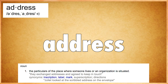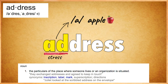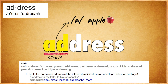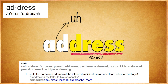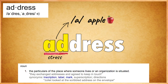In regard to pronunciation: when we use the noun, we want to put the stress on the first syllable and use the 'a' sound as in 'apple' — 'address,' 'address,' 'address.' For the sake of pronunciation, don't worry about that first D; just focus on putting the stress on the 'a' sound: 'address.' Then with the verb, we switch the stress to the second syllable and use the schwa sound — 'a-dress,' 'address,' 'address.'